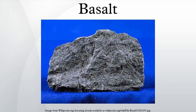The mineralogy of basalt is characterized by a preponderance of calcic plagioclase feldspar and pyroxene. Olivine can also be a significant constituent. Accessory minerals present in relatively minor amounts include iron oxides and iron-titanium oxides, such as magnetite, ulvöspinel, and ilmenite. Because of the presence of such oxide minerals, basalt can acquire strong magnetic signatures as it cools, and paleomagnetic studies have made extensive use of basalt.